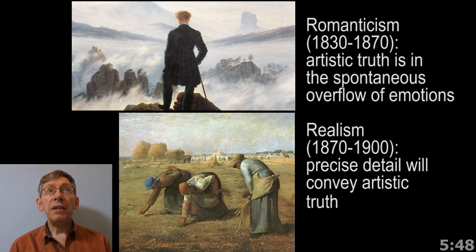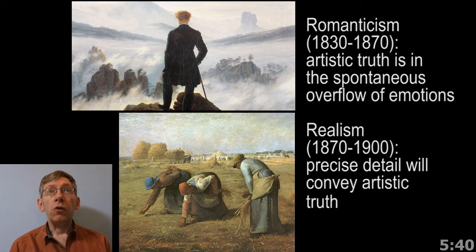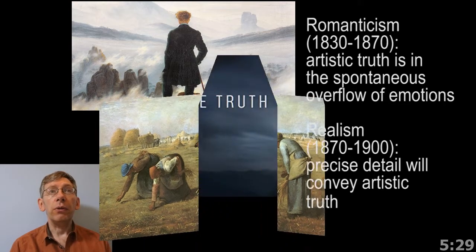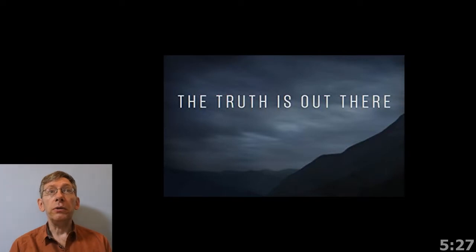By the 19th century, there are also two artistic and literary trends worth mentioning: Romanticism and Realism. Romanticism says that truth is found in the human heart and in feelings. Realism argues that attention to precise detail and accuracy will convey truth. These are all different schools, but what they have in common is the assumption that truth is knowable — we just have to get to it.